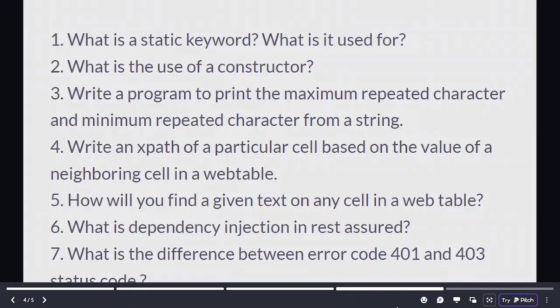Fourth question, write an xpath of a particular cell based on the value of a neighboring cell in a web table. Fifth question, how will you find a given text on any cell in a web table? Sixth one, what is dependency injection in REST Assured?